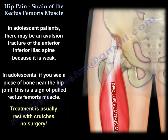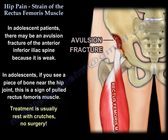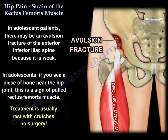In adolescents, you will have avulsion of the anterior inferior iliac spine because the bone is weak. So if you see a piece of bone near the hip joint, this is a pulled rectus femoris, innervated by the femoral nerve, and the treatment is no surgery — just rest and crutches.